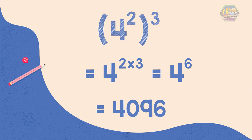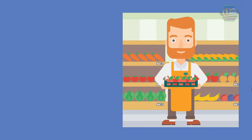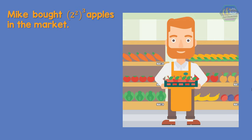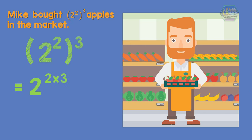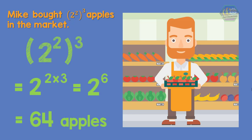For another example, Mike bought 2 raised to the power of 2 raised to the power of 3 apples in the market. How many apples did Mike buy? The equation 2 raised to the power of 2 raised to the power of 3 is equal to 2 raised to the power of 2 times 3. Then the equation will become 2 raised to the power of 6, which is equal to 64. Therefore, Mike bought 64 apples.